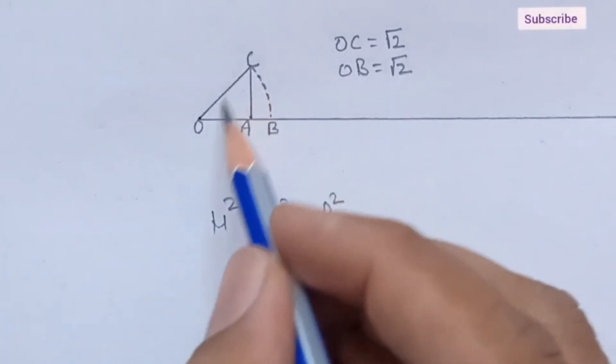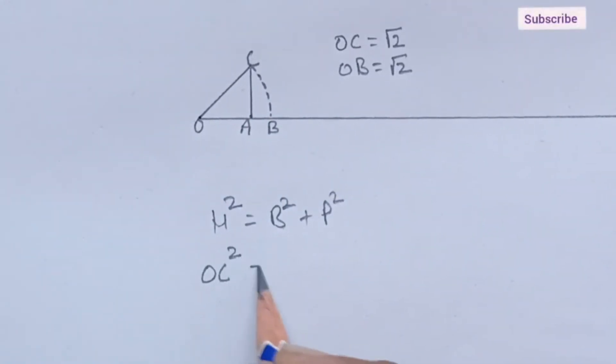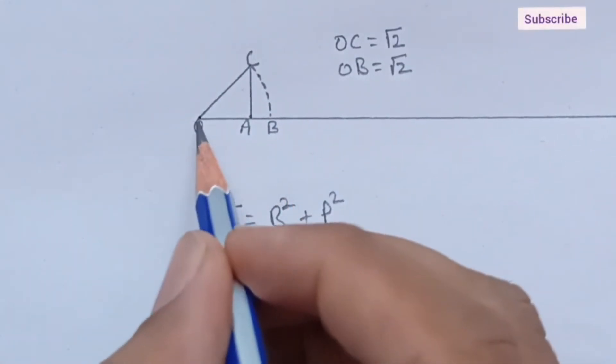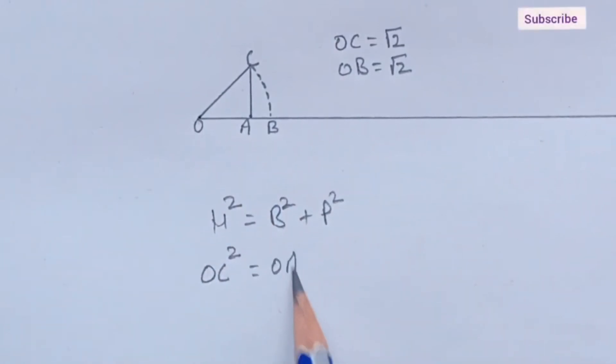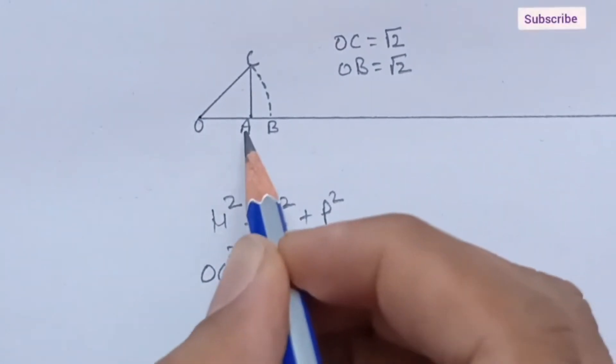Hypotenuse is OC. OC square. Base is OA. OA square. Perpendicular is AC square.